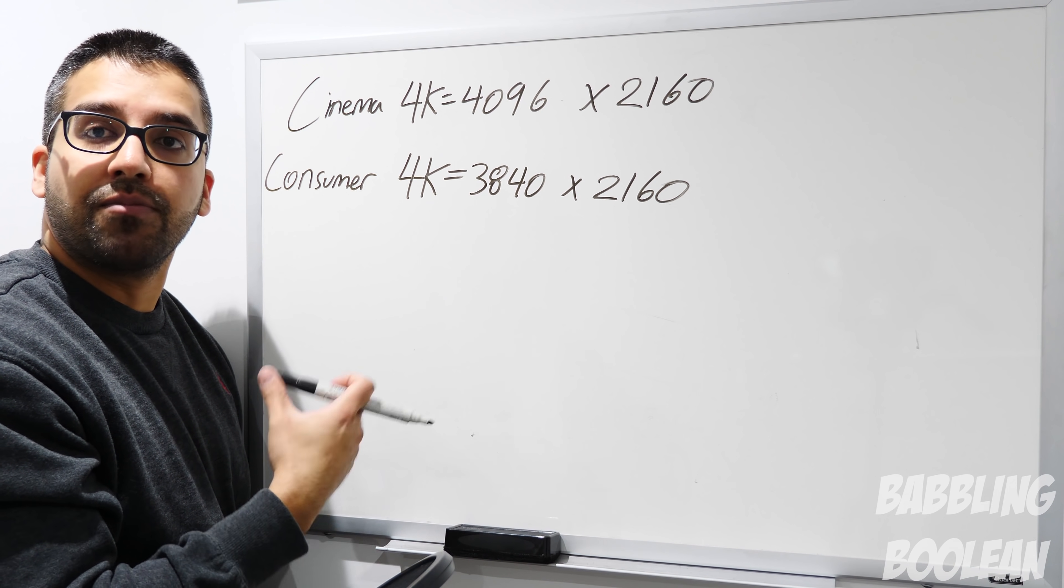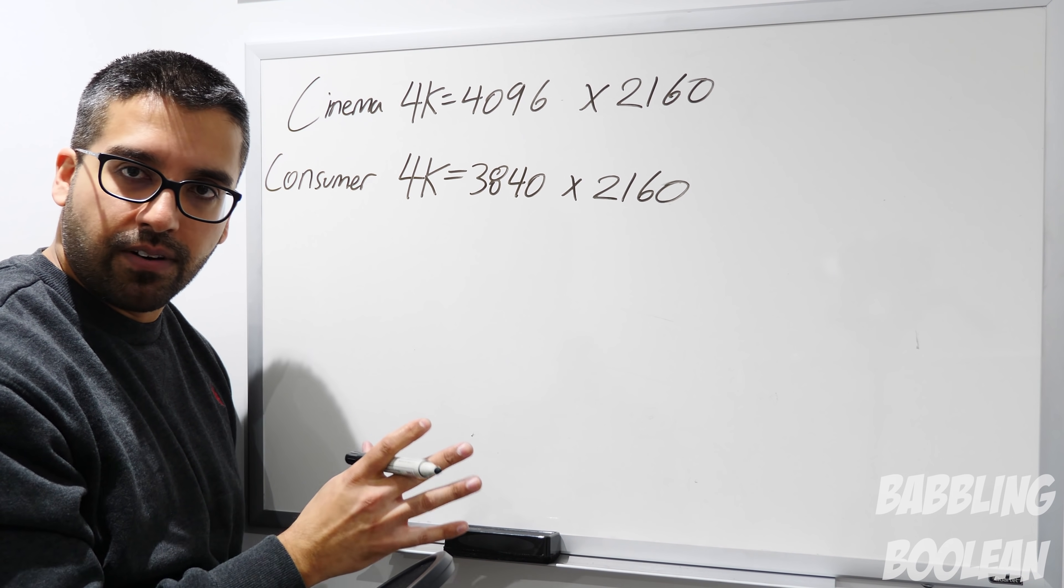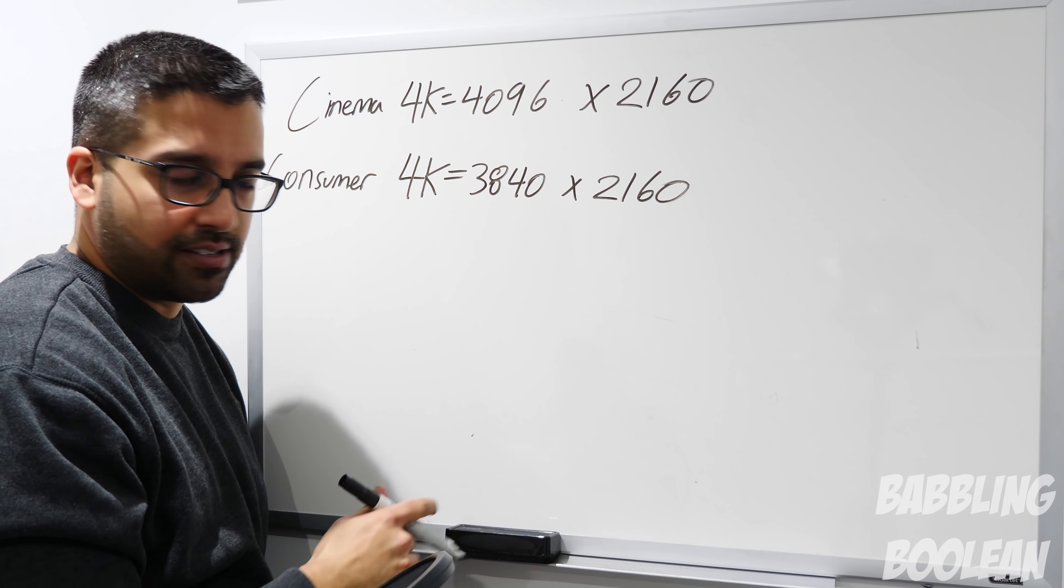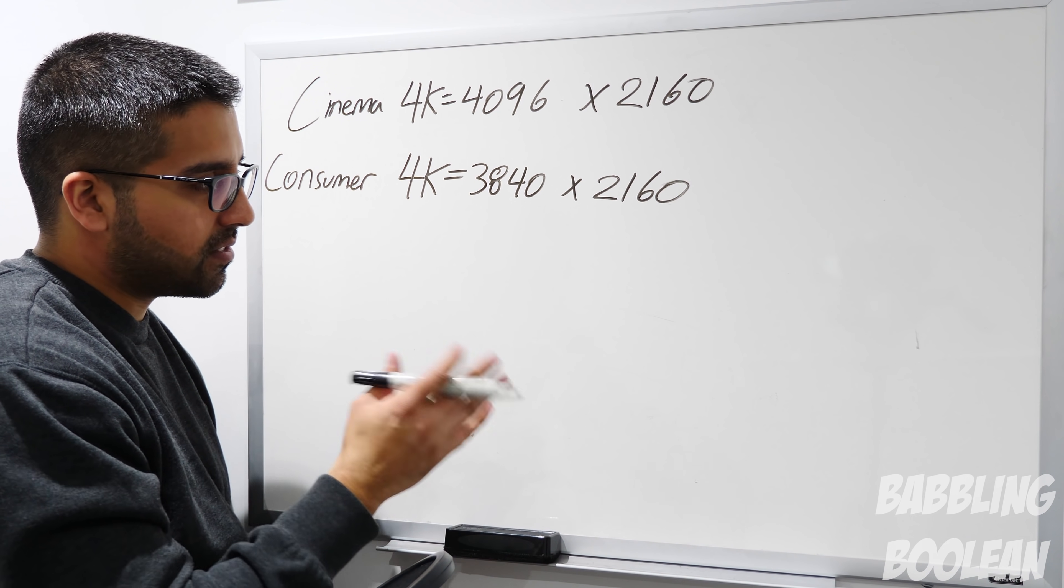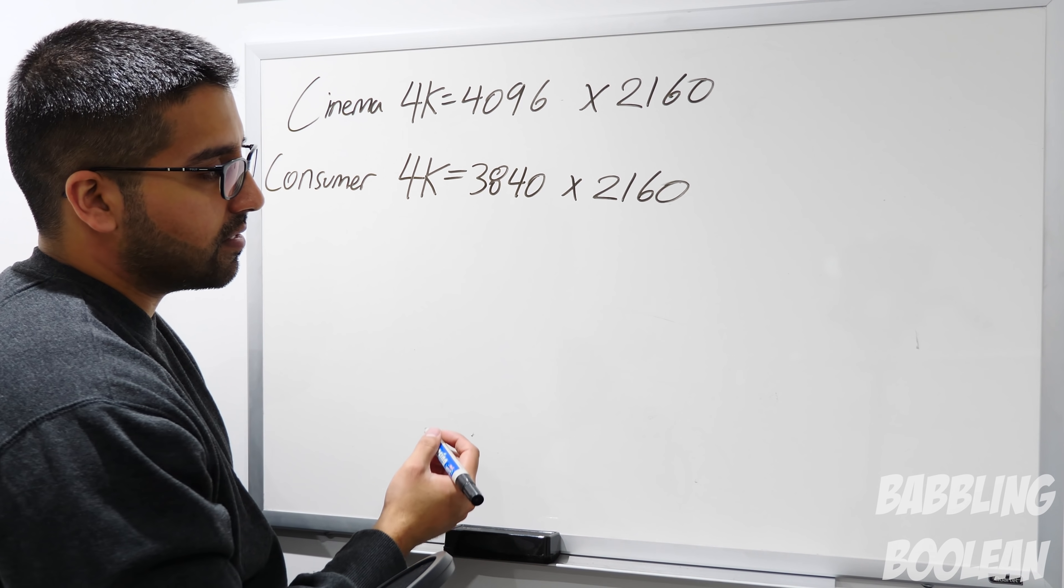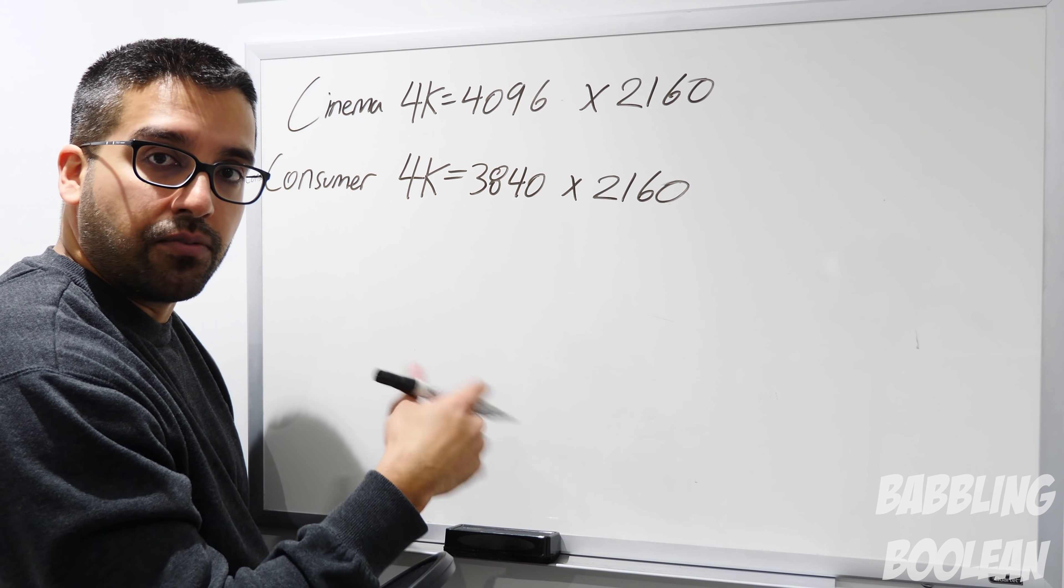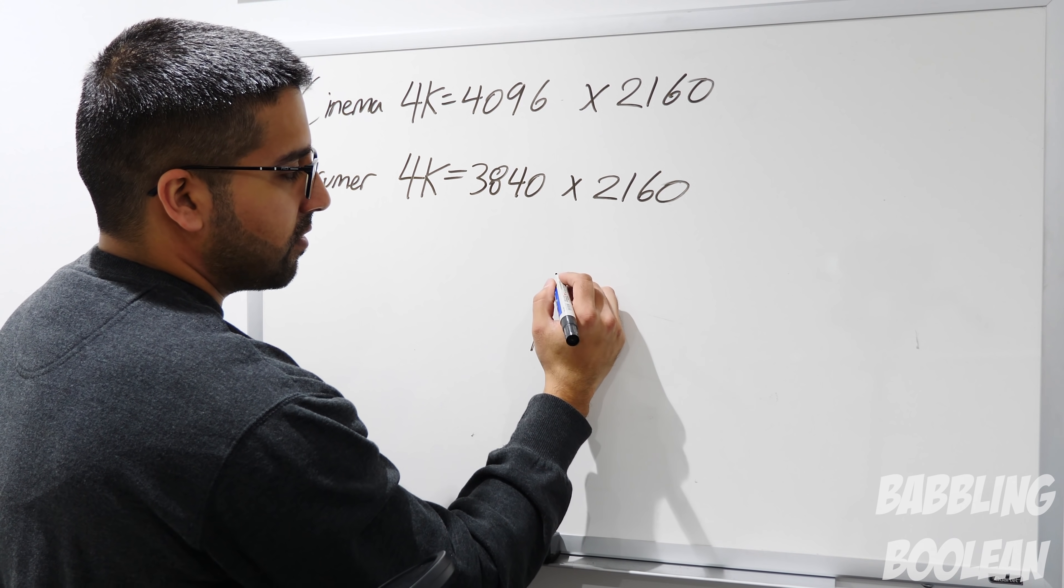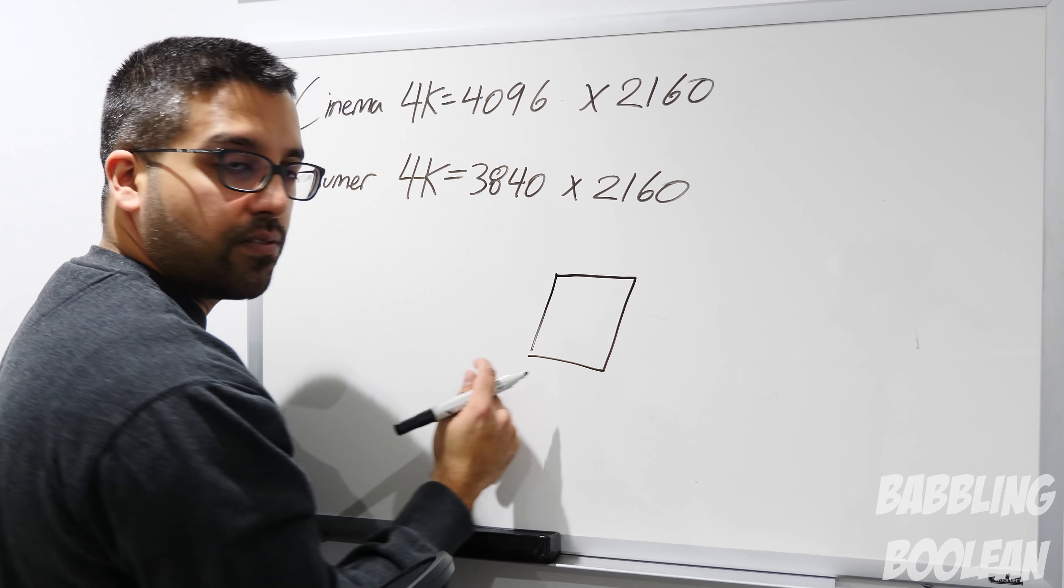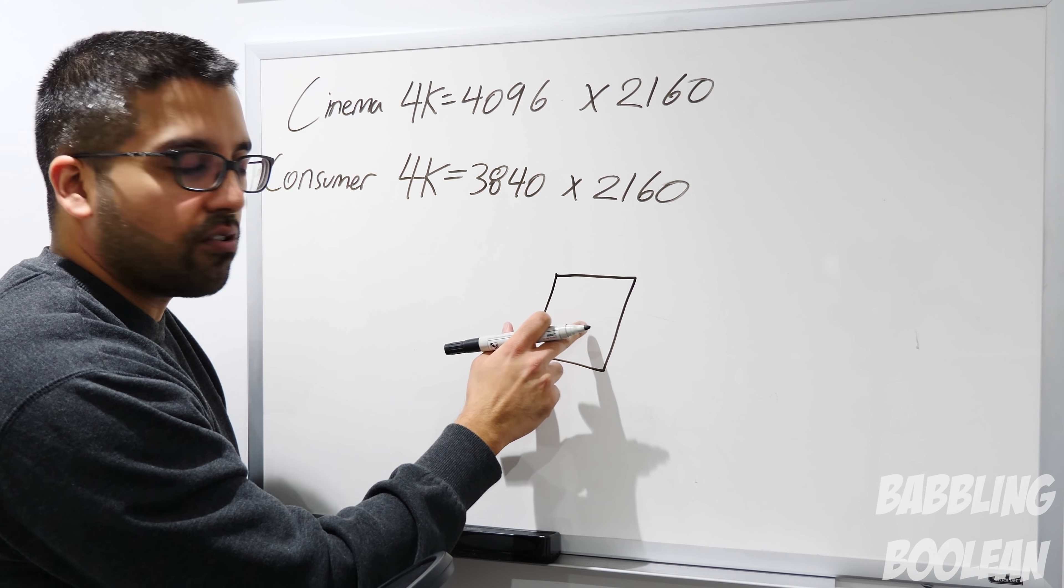However, cinemas have a different aspect ratio than consumer TVs. Aspect ratio, very quickly, I'm not going to get too many technical details, is basically the shape of the TV. For example, 4x3 TVs, which are like standard definition before HD, were well, 4x3 is a very close number, 4 and 3 are very similar, so it'll look almost like a square.